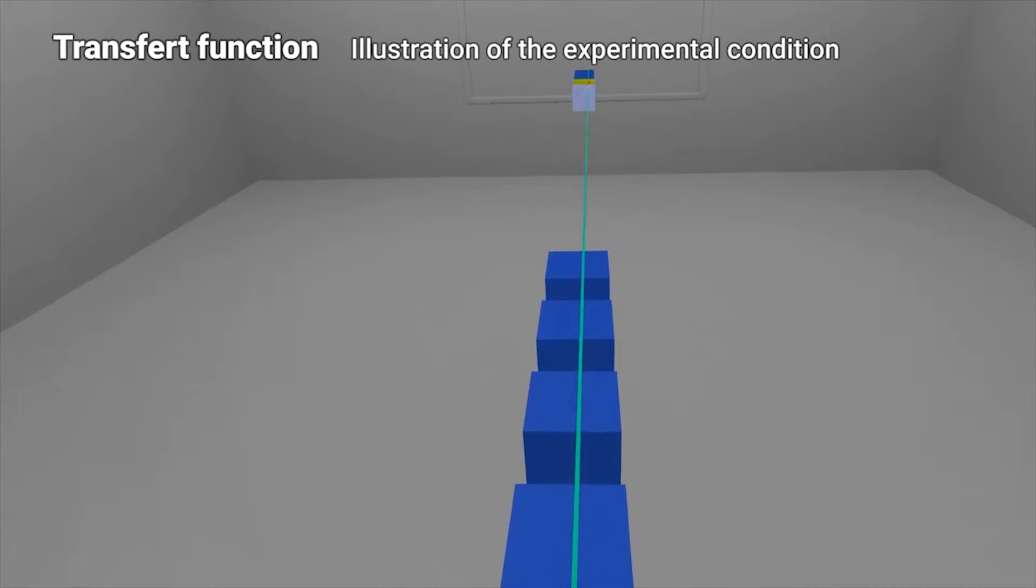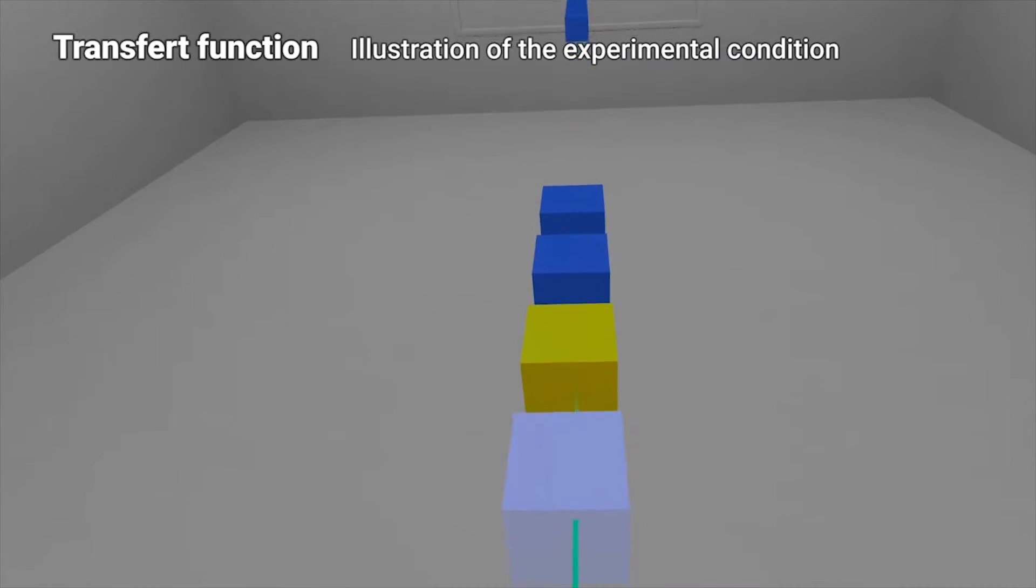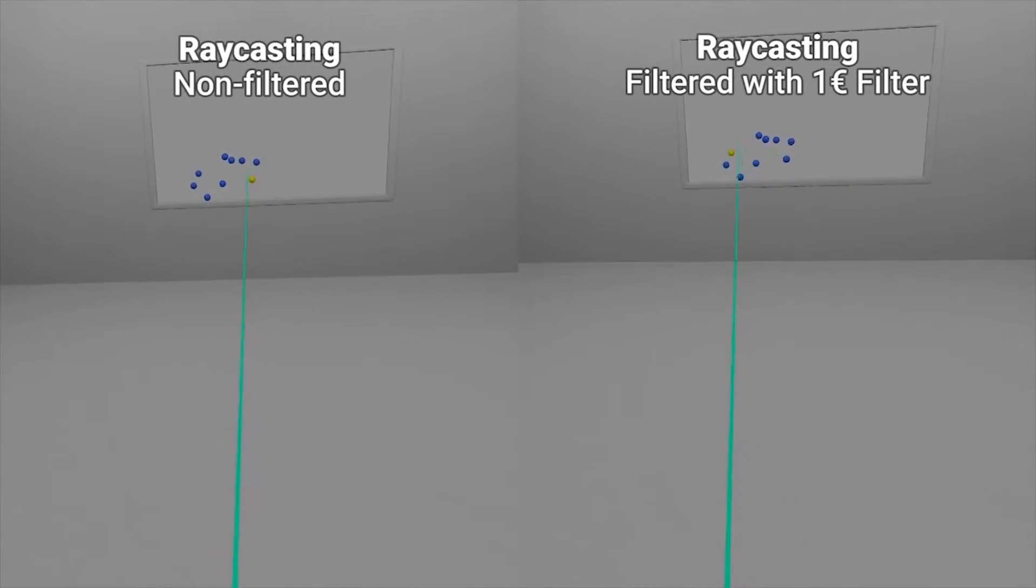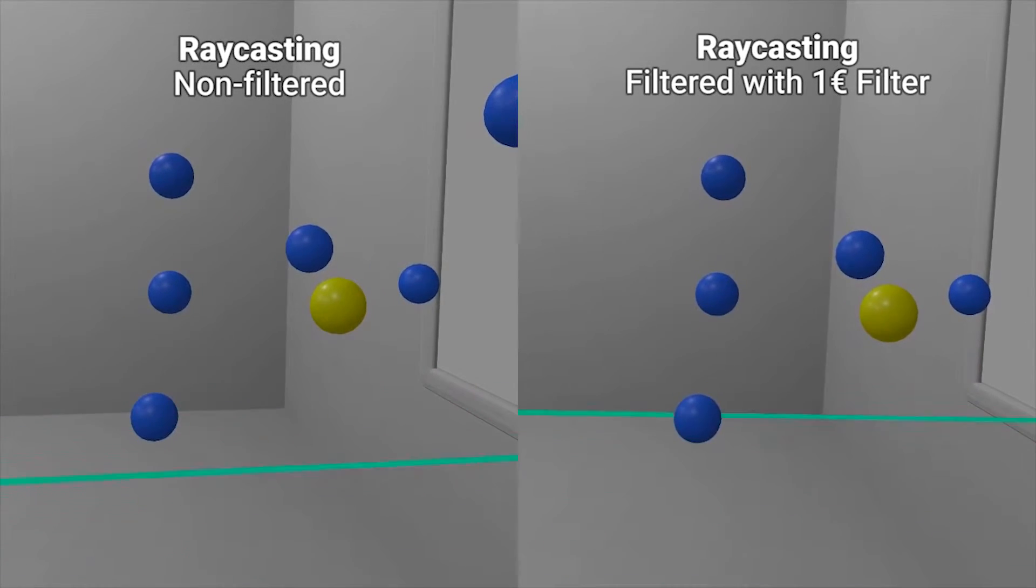We compare multiple transfer functions for the movement of the cursor along the ray. We also conducted an experiment that evaluates the efficiency of filtering the ray.